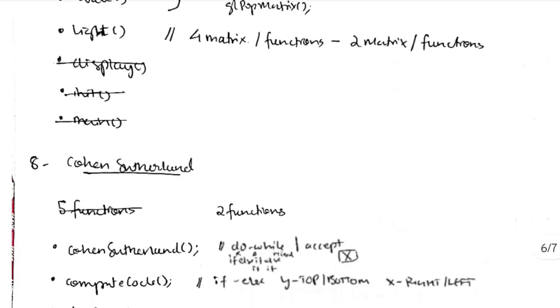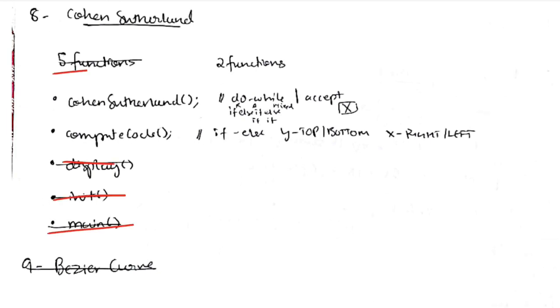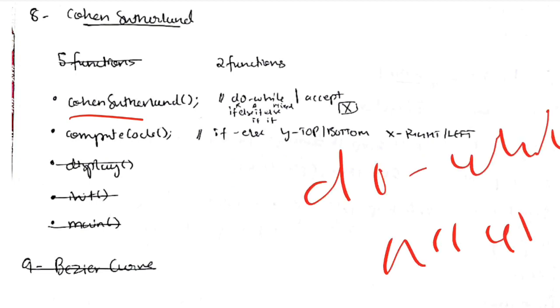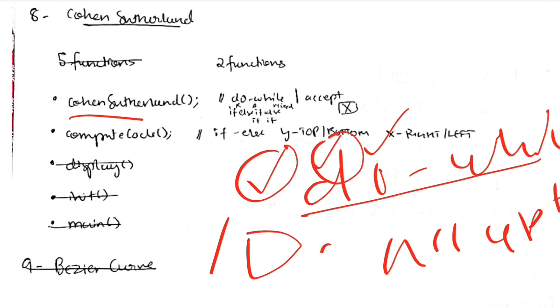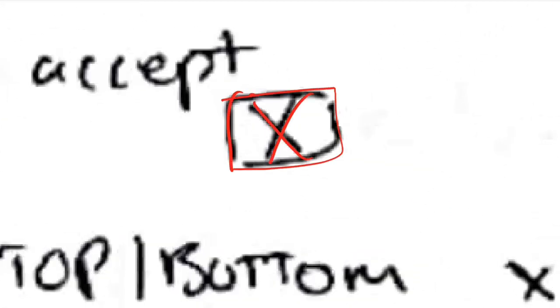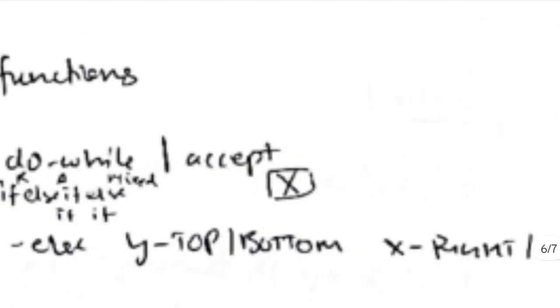For program 8 (Cohen-Sutherland), there are 5 functions. After removing the three common ones, we are left with compute_code and the cohen_sutherland algorithm function. The compute_code function has two if-else conditions — one checking y (top or bottom) and one checking x (right or left) — and returns the computed code. The cohen_sutherland function uses a do-while loop with if-else-if-else logic: the if block rejects lines outside the window, the else-if checks if the line is fully inside, and the else handles lines that cross the boundary. After the loop, the accept block draws the final clipped line with its vertices and port coordinates.